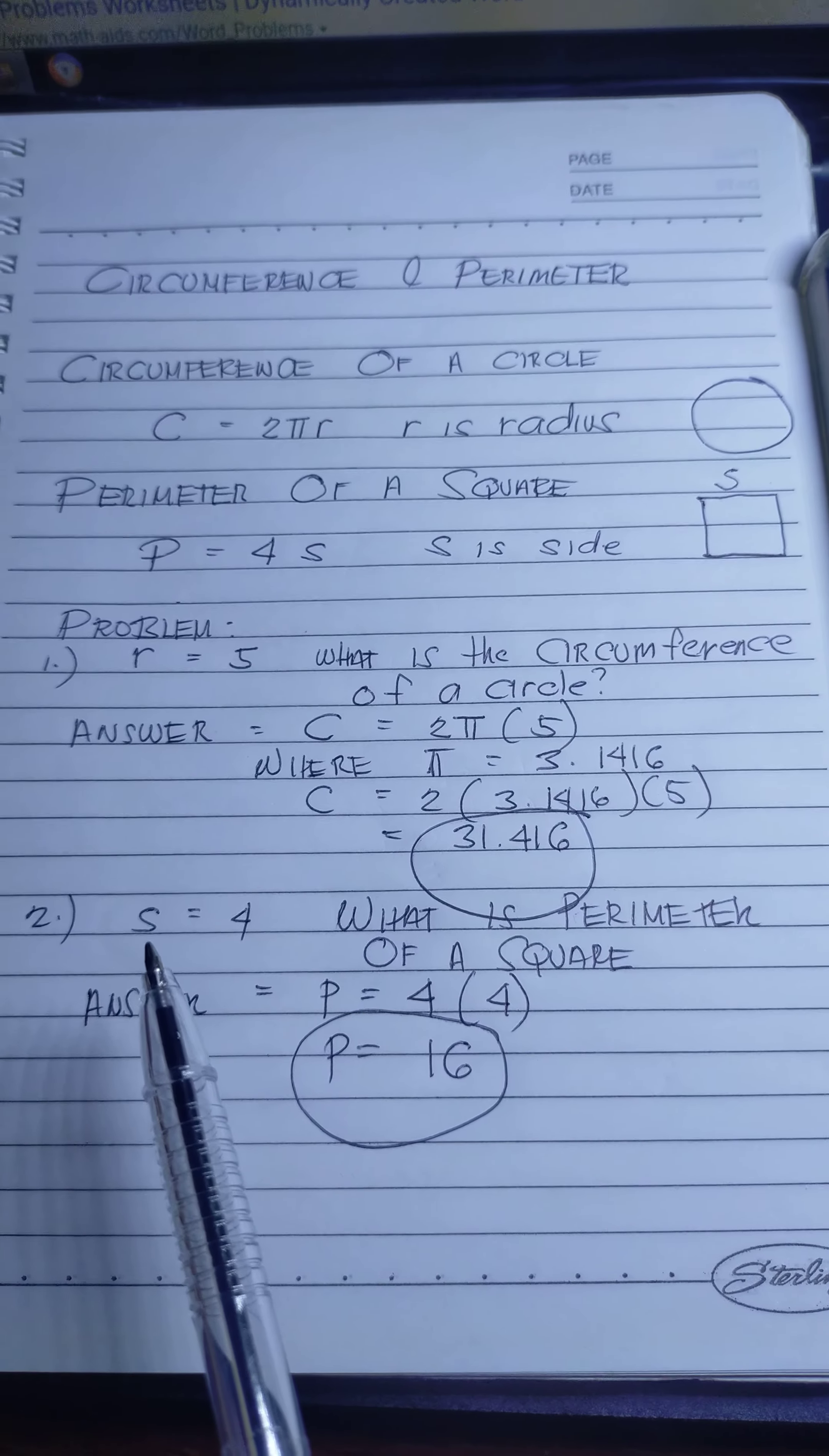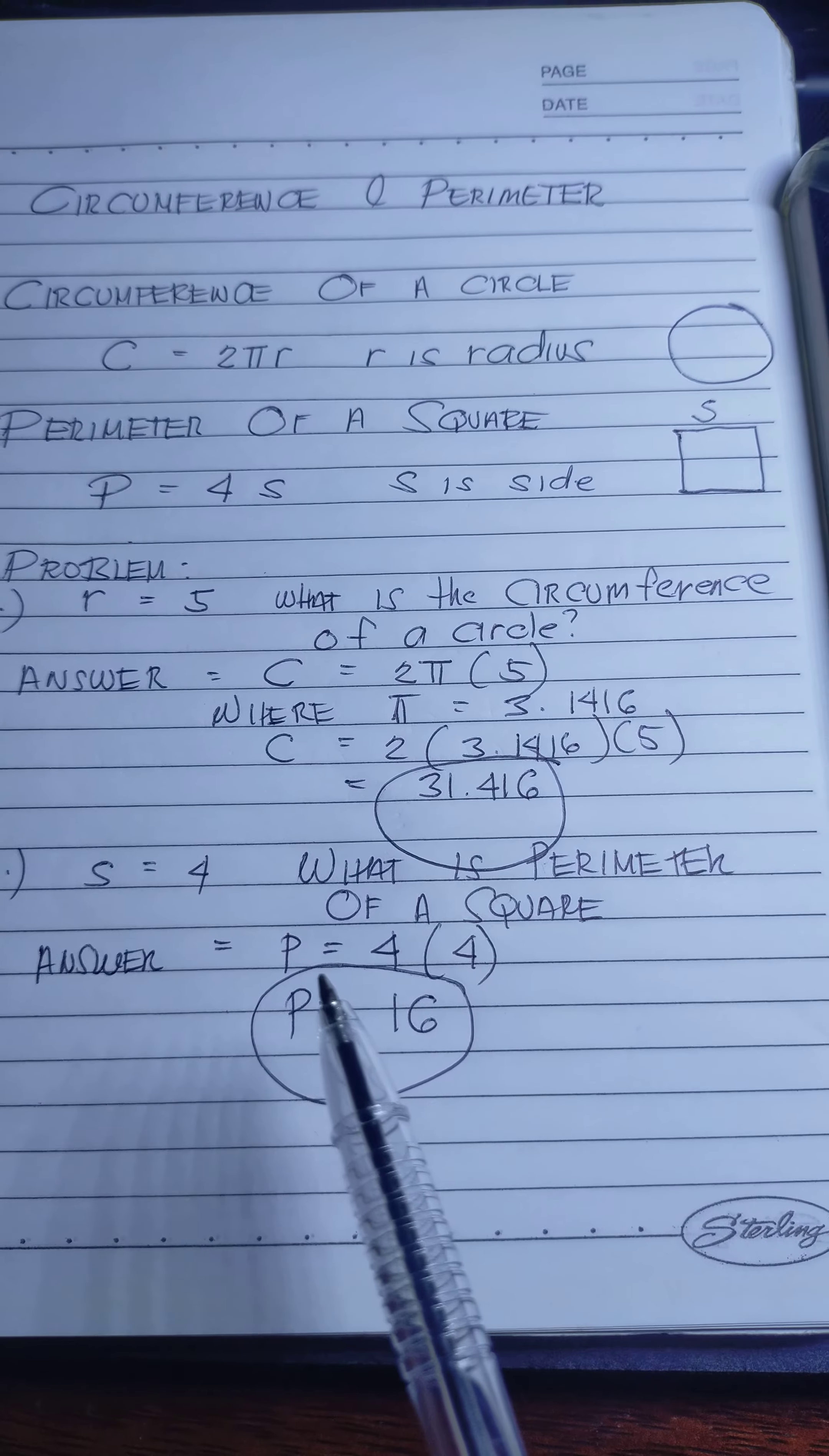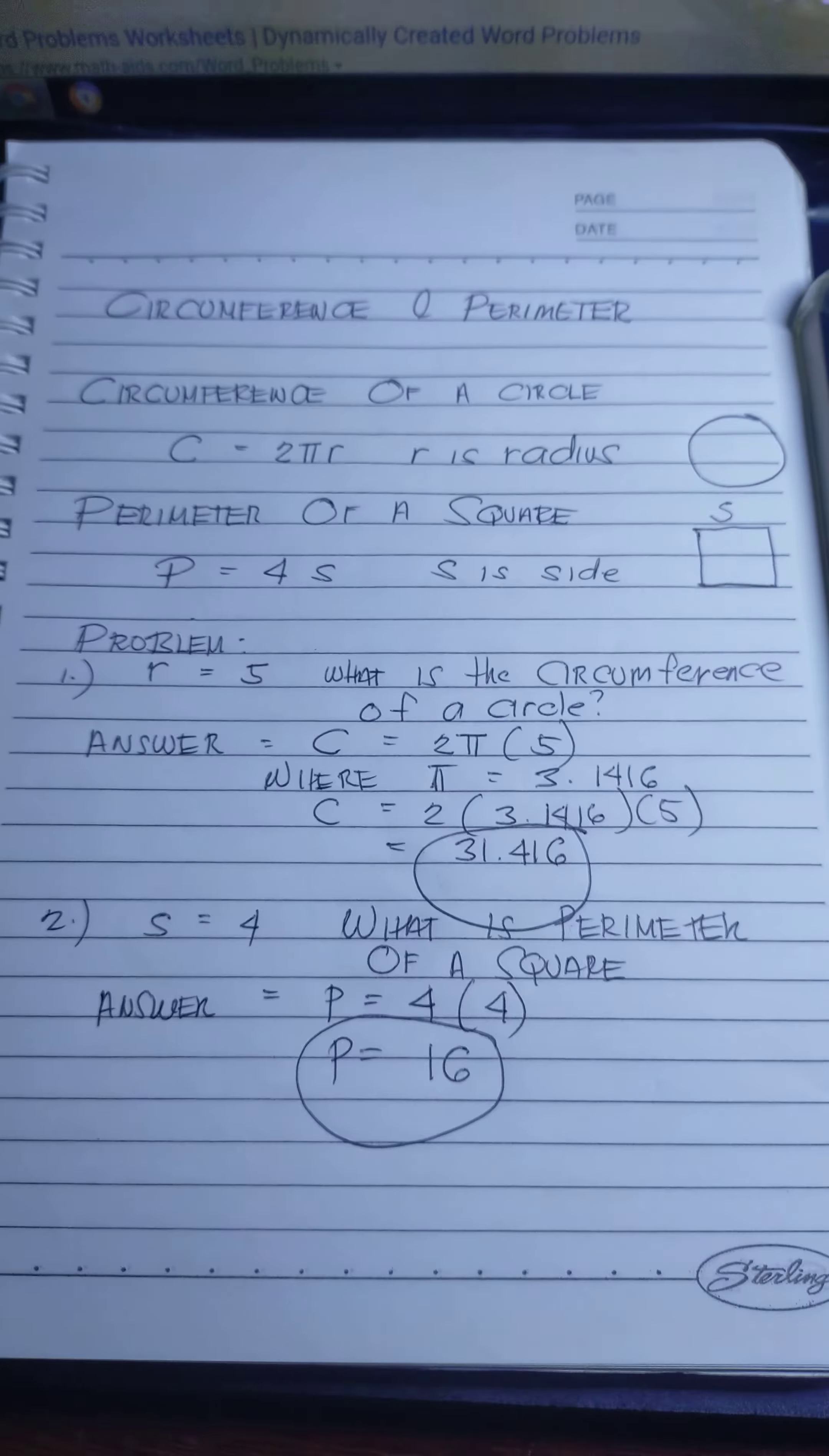For the perimeter, let's say side is 4. What is the perimeter of a square? The answer is P = 4 × 4. So the answer is P = 16.